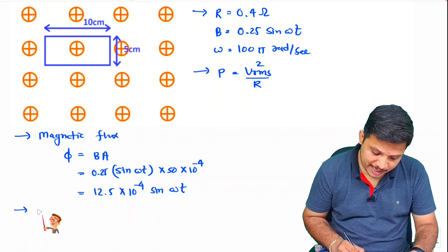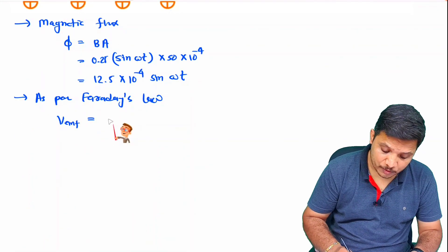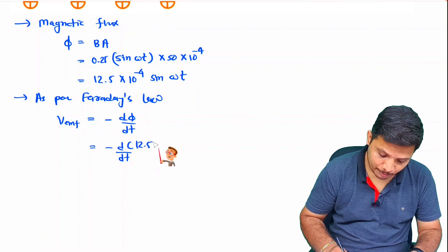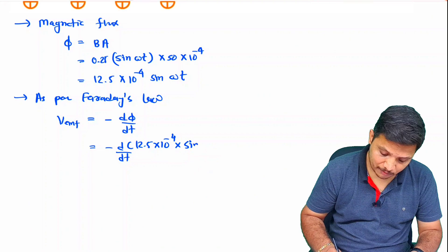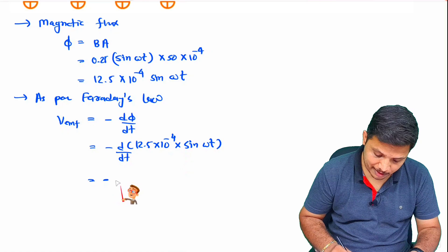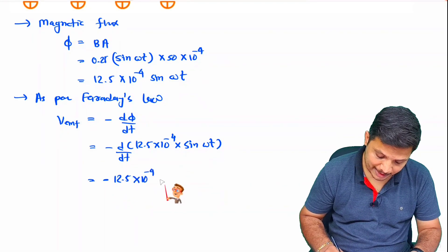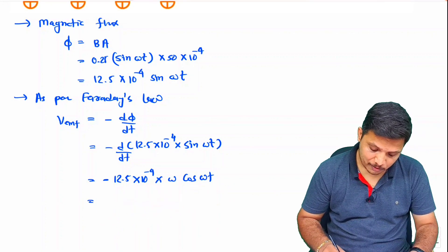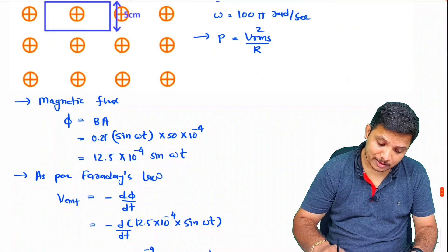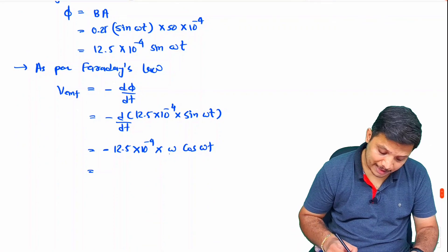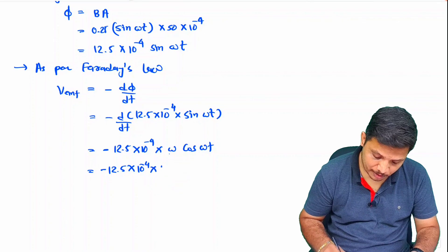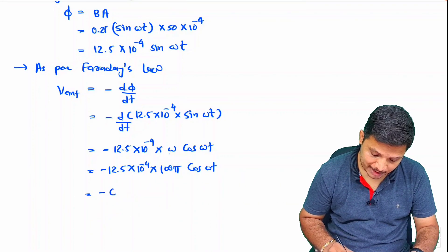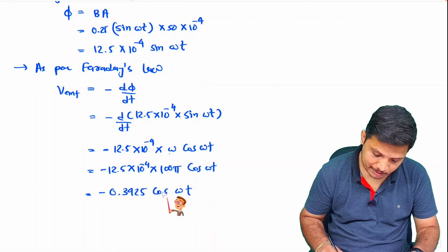Now we calculate the induced EMF based on Faraday's law. Induced EMF is minus dφ/dt. Placing the value of φ, that is 12.5 × 10⁻⁴ sin(ωt). The constant 12.5 × 10⁻⁴ comes outside and the differentiation of sin(ωt) with respect to time is ω cos(ωt). The value of ω is 100π, so EMF = minus 12.5 × 10⁻⁴ × 100π × cos(ωt), which simplifies to minus 0.3925 cos(ωt).